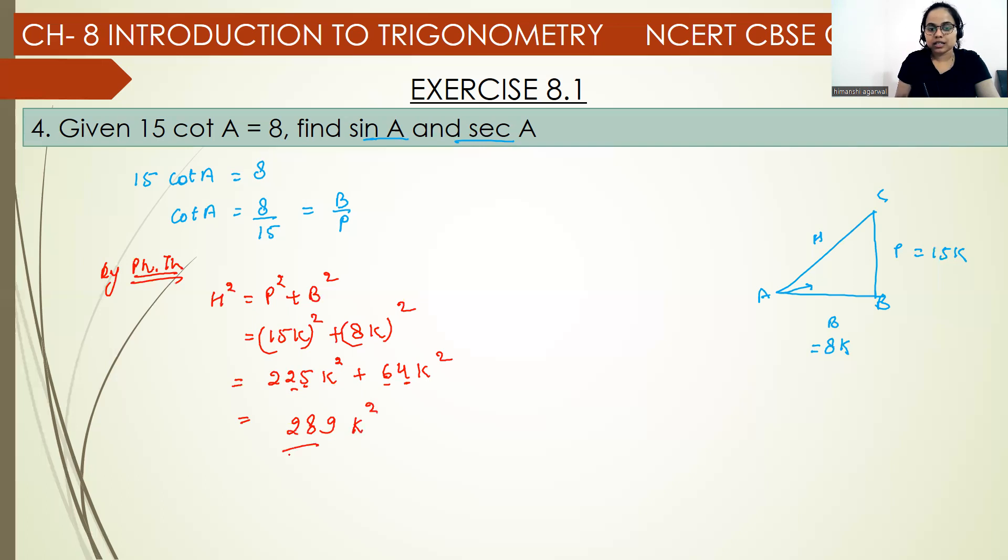Now see, 289k square. What's the square root of 289? It's 17. So hypotenuse equals 17k. The hypotenuse is 17k.